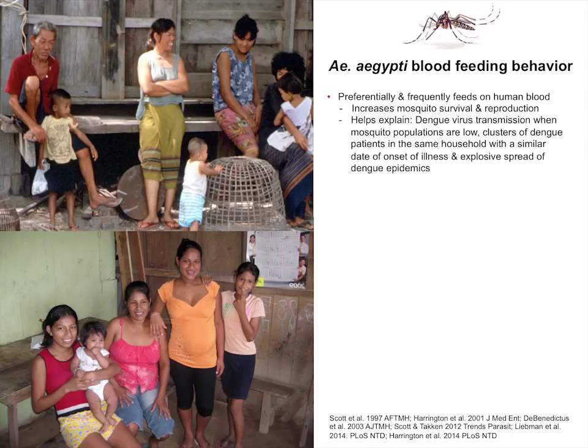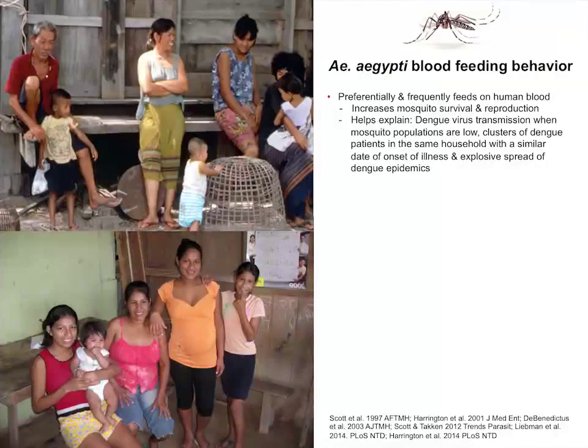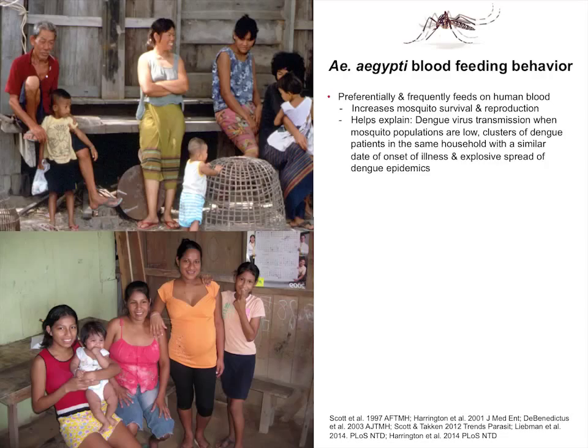We saw that Aedes aegypti feeds preferentially and frequently on human blood. As a side note, they really benefit from this — human blood has chemistry that means by feeding on it frequently, they lay more eggs and live longer. It also explains how the virus can be transmitted so efficiently when there really aren't a lot of mosquitoes. If you went into one of these houses in Thailand and collected 10 females, that would be a lot. The population density tends to be low, but we can have explosive epidemics like we're seeing with Zika in Brazil. It also explains how you can have clusters of infections — a family of four or five all coming down with dengue within 12 to 24 hours. That could be a single mosquito probing each one of those individuals and infecting them in a short period of time.